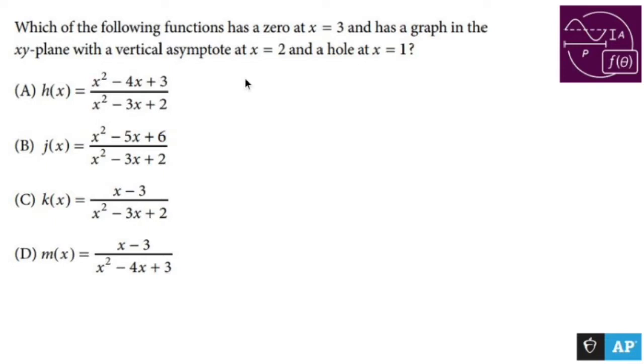All right, let's do this. If something has a hole, that means there's an x minus one on the top and on the bottom of a rational function. If it has a vertical asymptote at x equals two, that means it has an x minus two in the denominator, but not in the numerator.